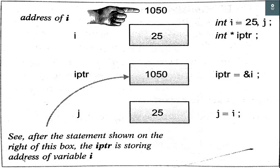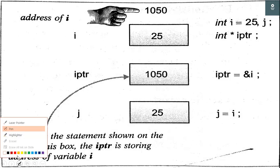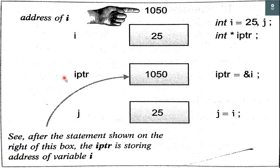Here is an example from the book. We have a variable named i on the right side in the code. In the first line we have two variables: the first one is i of type integer, and we are assigning value 25 to i. Therefore 25 is stored inside the i block, and the address of i is 1050.